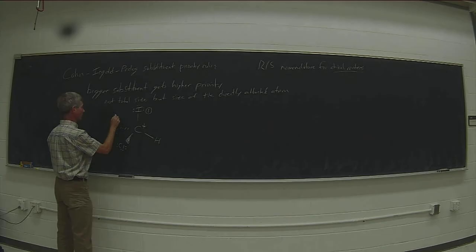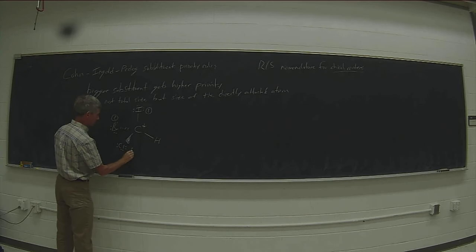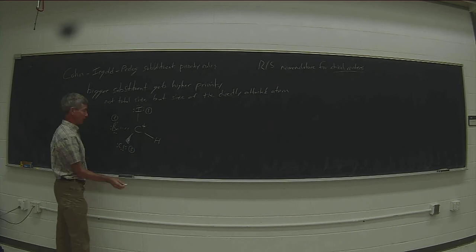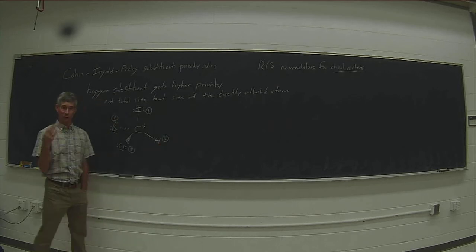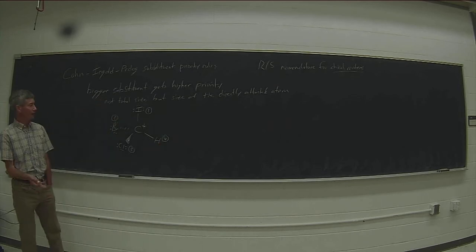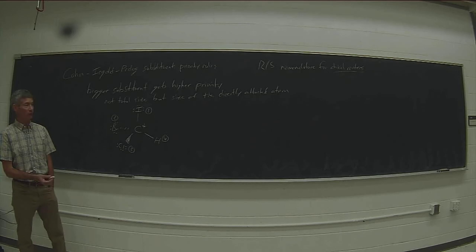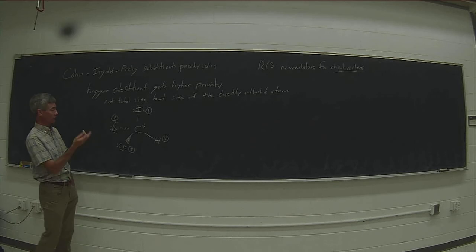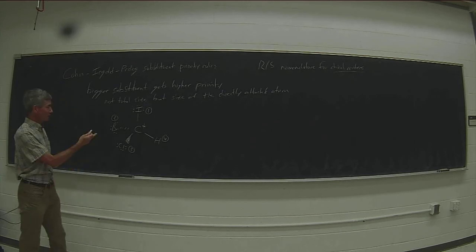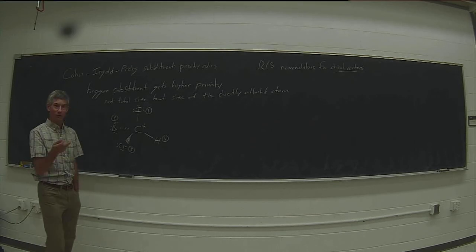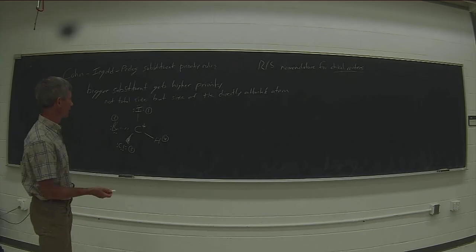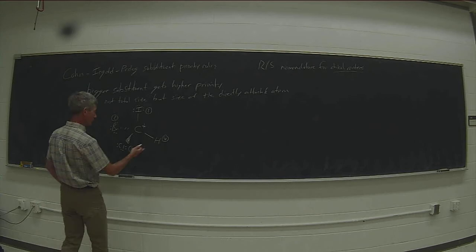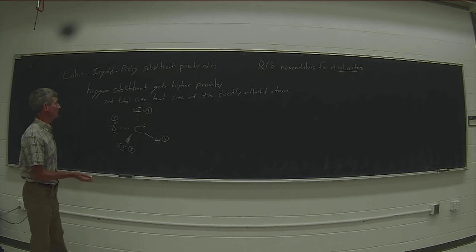Hydrogen — just a protium with a single proton and no neutrons — is always the last priority substituent. Hydrogen loses to everybody, and even loses to heavy hydrogen or deuterium, which has one proton and one neutron.